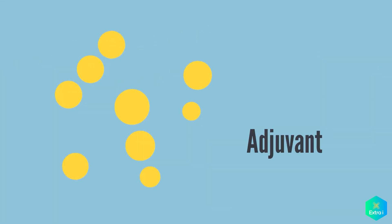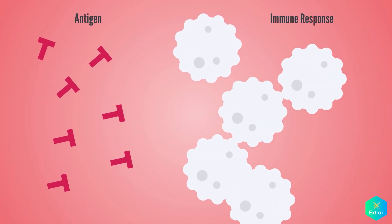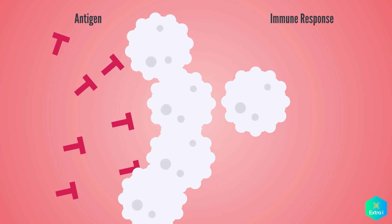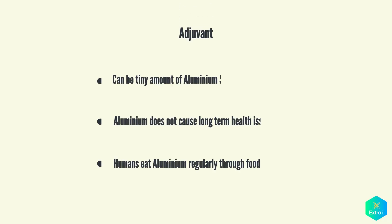Some vaccines also contain adjuvants. An adjuvant improves the immune response to the vaccine by stimulating local immune cells. The adjuvant may be tiny amounts of aluminium salts. Aluminium has been shown not to cause any long-term health problems, and humans ingest aluminium regularly through eating and drinking.